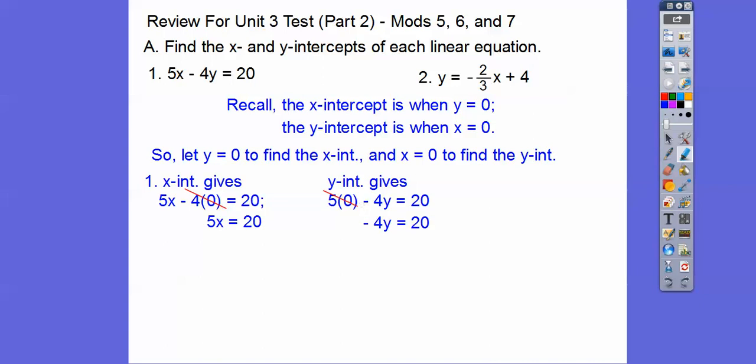And when x equals 0, 4y goes into 20 how many times? And it's negative 4, so be careful. So we get the x-intercept is at 4, 0, and the y-intercept is at 0, negative 5.